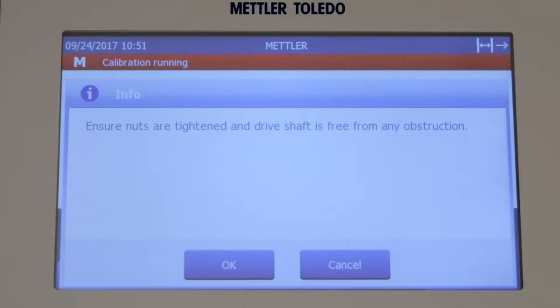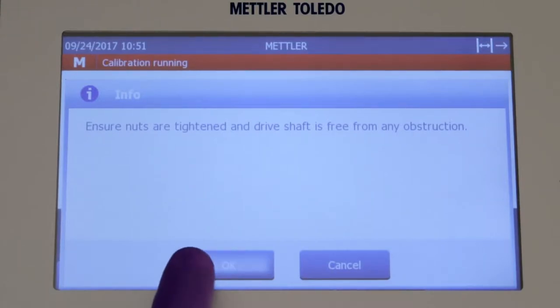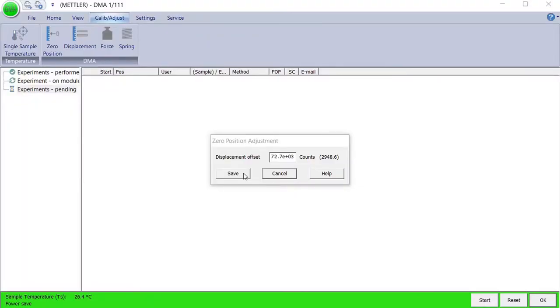Check that all the nuts are tightened and the drive shaft is free from any obstructions. Tap OK to confirm. The newly calculated displacement offset parameter appears in the Zero Position Adjustment dialog box in the module control window. The value of the previous calculation is included in brackets.